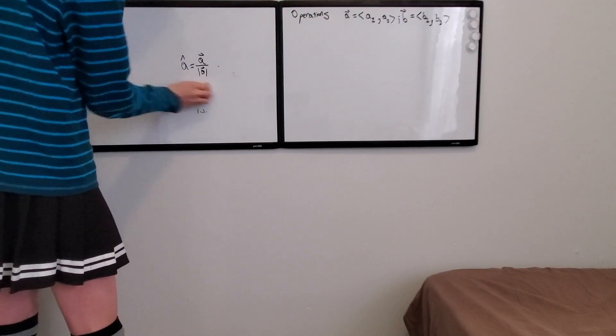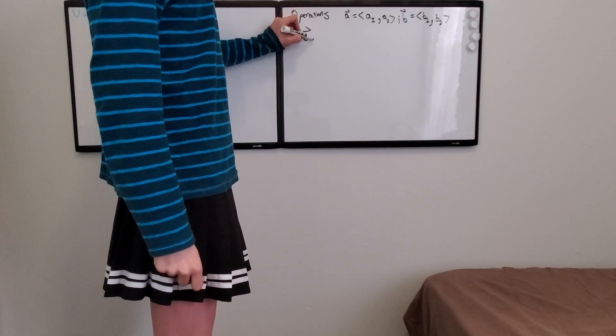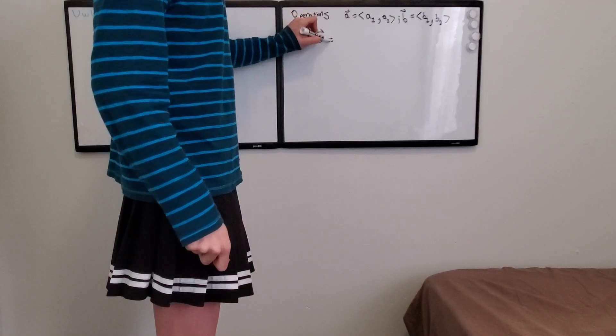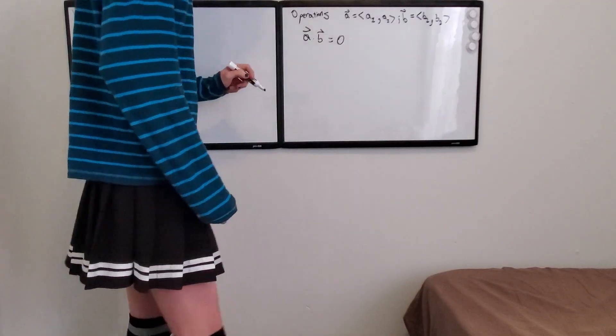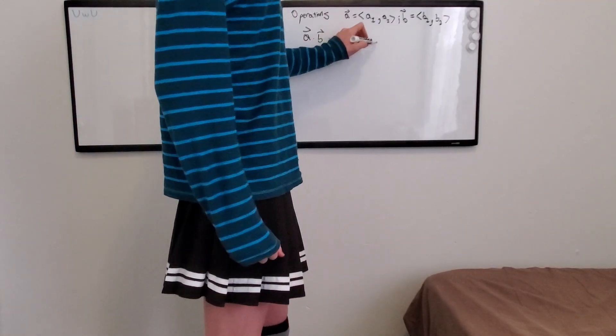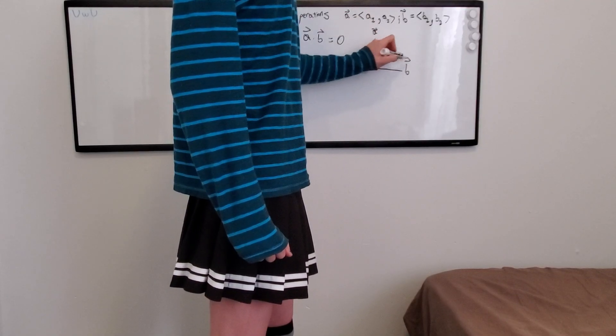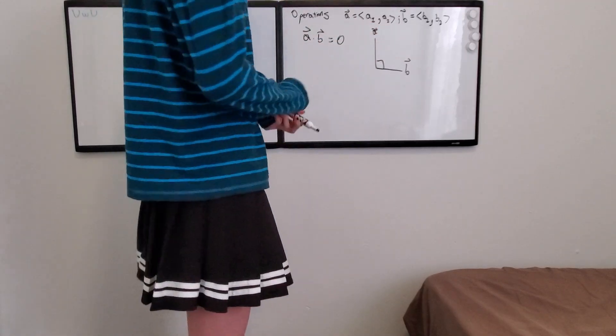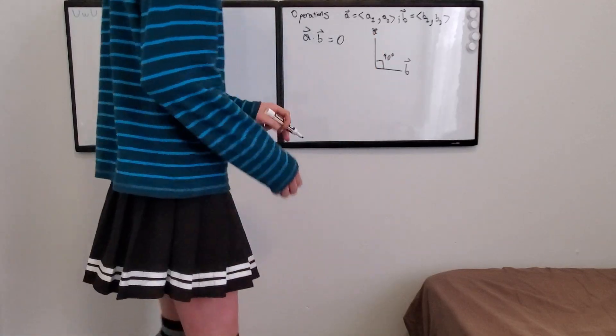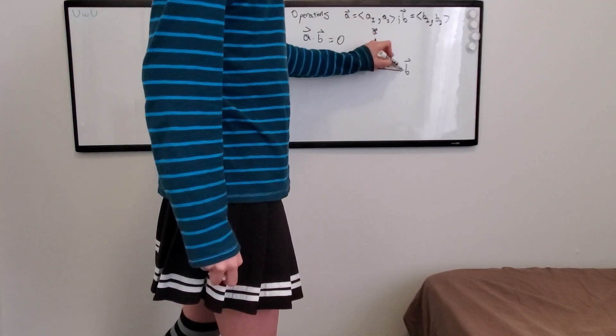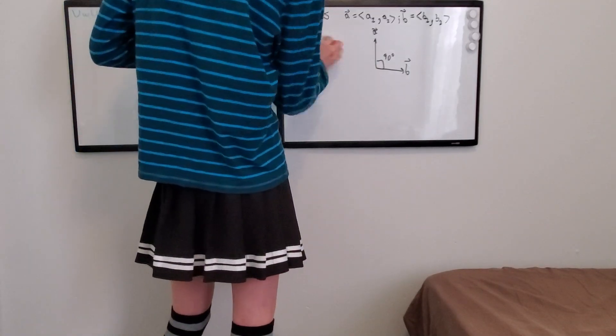Oh, one other thing about dot products is that if you took A dot B equal to zero, what this tells you is that A and B are orthogonal, which is just a fancy way of saying they're 90 degrees from each other. That's just a side note.